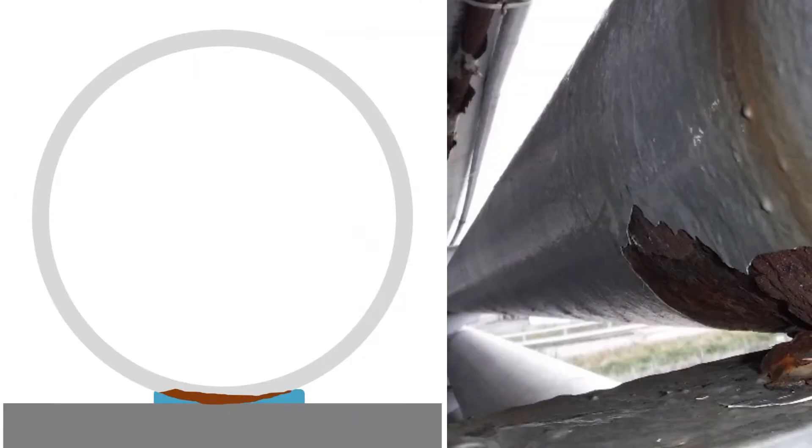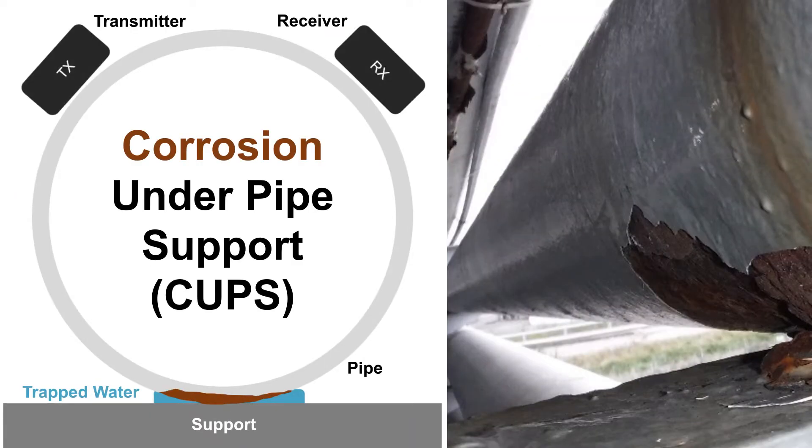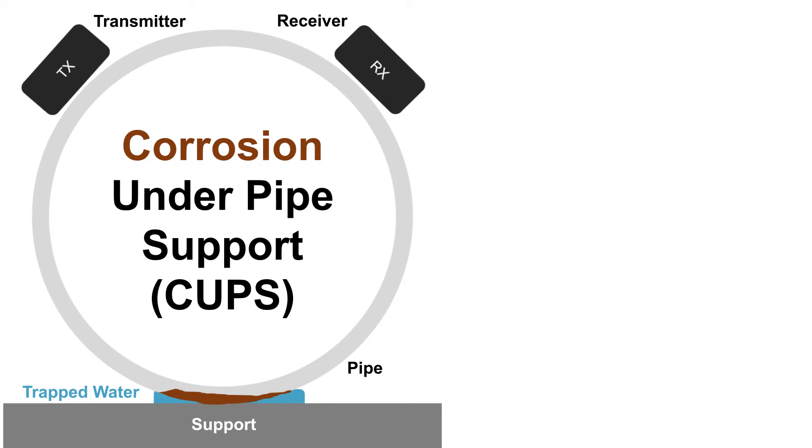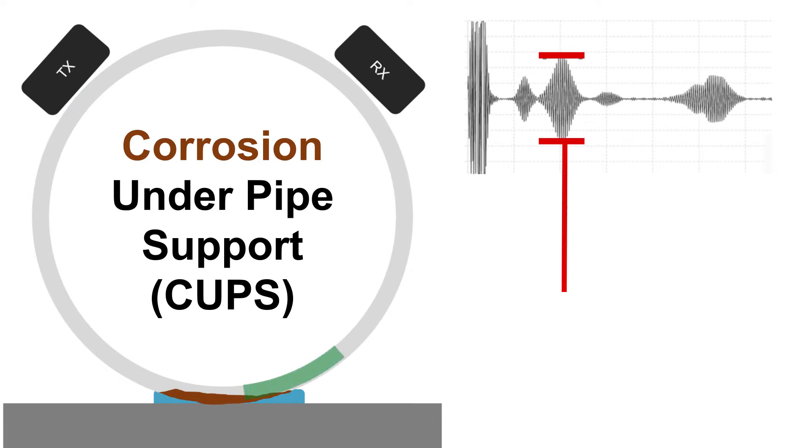Corrosion under pipe supports can be inspected using ultrasonic or guided wave scanners. Typically, the waves would interact with the defect and the reflected or through transmitted wave amplitude is used to estimate the defect severity.